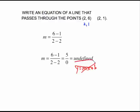This one, you must remember, undefined goes with a vertical line. And a vertical line is always the equation x equals some value, and the value it equals is whatever the x value was in the problem. So, x equals 2.